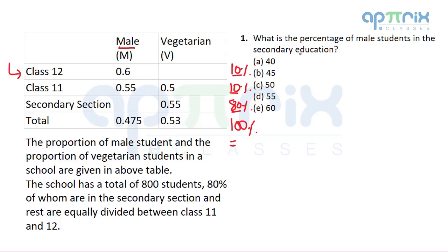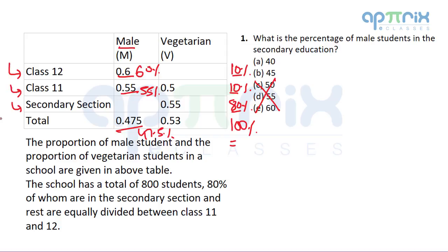Question 1 is asking: what is the percentage of male students in secondary education? We know 0.6 means 60% of class 12 is male, 0.55 means 55% of class 11 is male, and the secondary section value is unknown. Overall, 47.5% are male. When you look at this question, you may feel you need to calculate many things. But first, I will tell you that three options are not possible. There are three types — class 12, class 11, and secondary education — having male percentages of 60%, 55%, and something unknown, while the total value should be 47.5%.